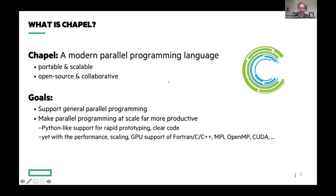The second goal is to make parallel programming at scale far more productive than it is today. We'd like the kind of support that Python is most often cited for — good support for rapid prototyping and code that's very clear to read and write. But where Python isn't known for performance and scalability, we want to get the performance, scalability, and GPU support of things like Fortran, C, C++, MPI, OpenMP, CUDA, and the like. So the best of both worlds is the goal.